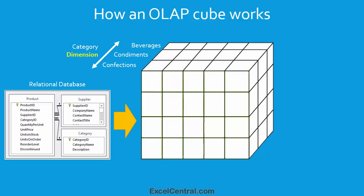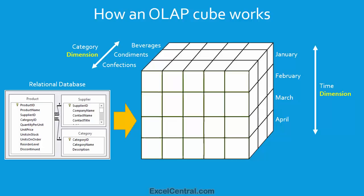Now let's look at another dimension, this time the dimension of Time. We're going to have January rolled up totals in the top slice of the cube, February rolled up totals in the next slice, then March, and then April rolled up totals in the bottom slice of the cube. Now let's cover another piece of OLAP technology: the measure. A measure is simply the thing that's been totalled. So let's add some measures along the bottom of the cube: In Stock, On Order, Sales Amount, Sales Cost, and Sales Quantity.